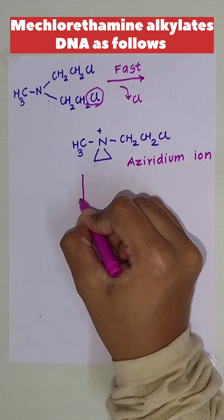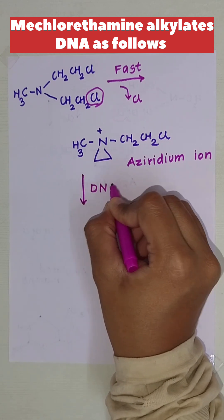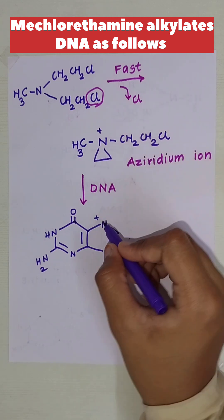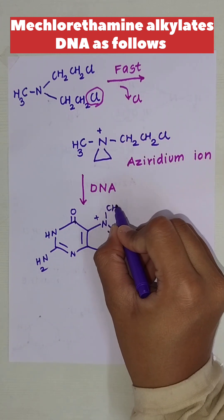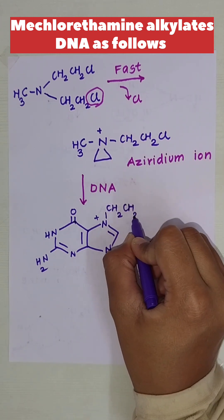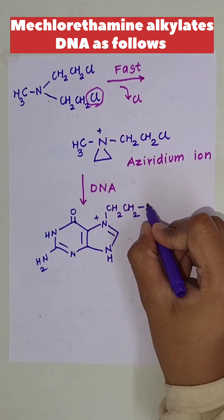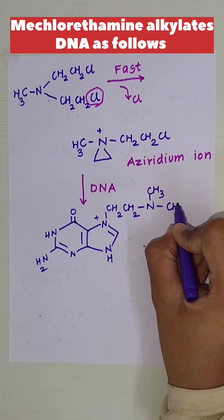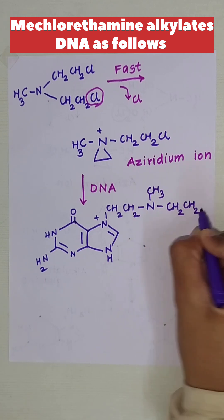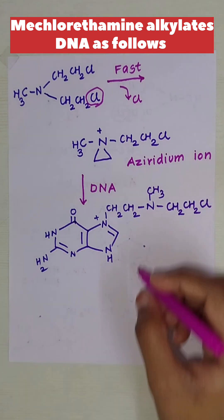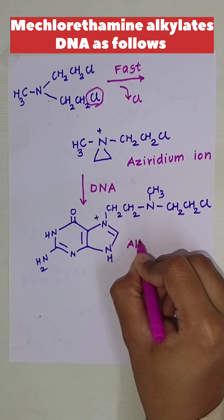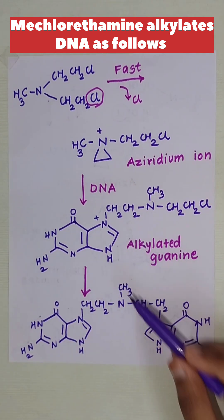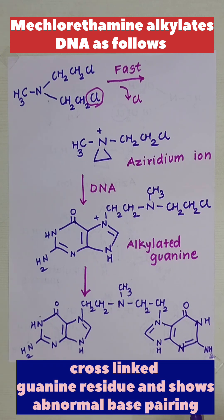The aziridium ion acts on the DNA at the guanine position, where CH2CH2 gets attached to the nitrogen forming CH3N-CH2CH2-N(guanine)-CH2CH2Cl. This is the alkylated guanine, which further forms a cross-linked guanine residue.